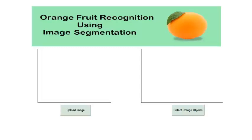This system detects orange fruit under different lighting conditions. We use image segmentation along with color detection to achieve this purpose.